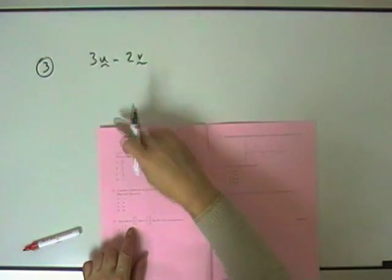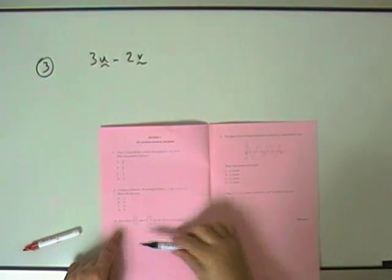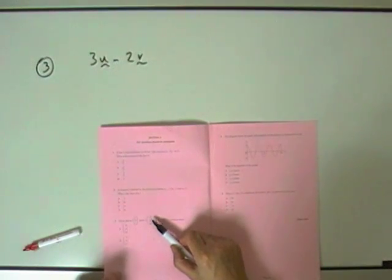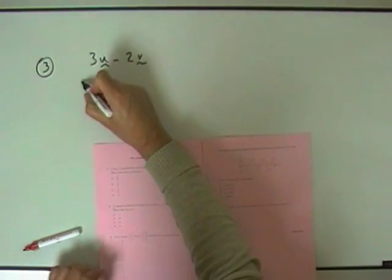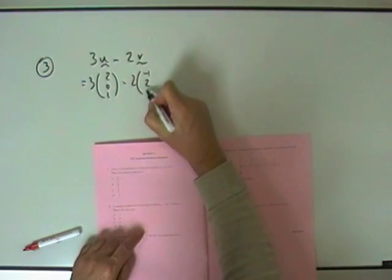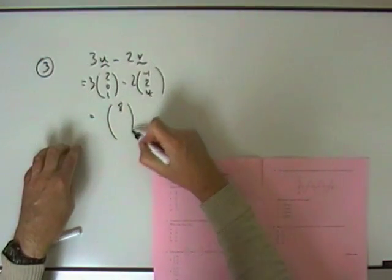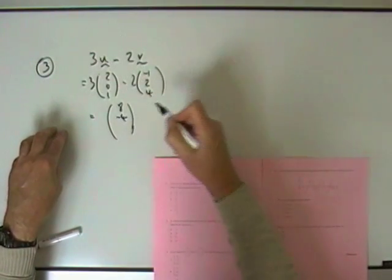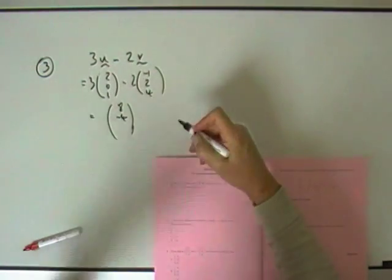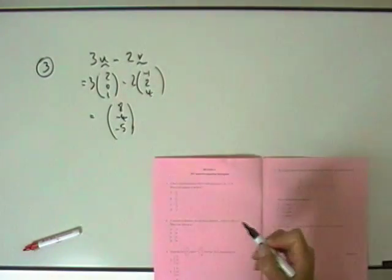And for question 3, given these two vectors, find 3 of the first, take away 2 of the second. Now since the answer is here you can always check. So I've got 3 times (2, 0, 1), take away 2 times (-1, 2, 4). So that's going to give me 3×2 are 6 plus 2 is 8. 3 nothing's a nothing, take away 4 is minus 4, which is probably enough to identify it. The only one that does that is D. I'll do the last one just as a check in case was a mistake. 3×1 are 3, minus 8 is minus 5, and it's still that, D.